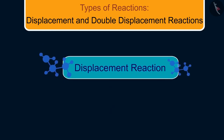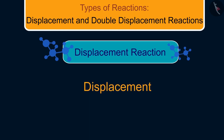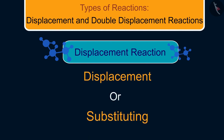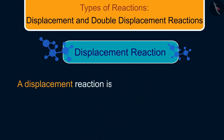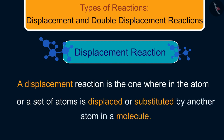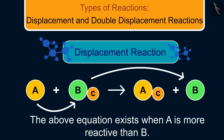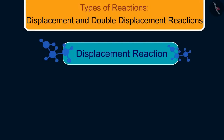Our first topic is displacement reaction. The word 'displace' tells us that we are displacing or substituting something. A displacement reaction is one wherein an atom or a set of atoms is displaced or substituted by another atom in a molecule. For example, if A is more reactive than B, then A can displace B from BC and form AC.